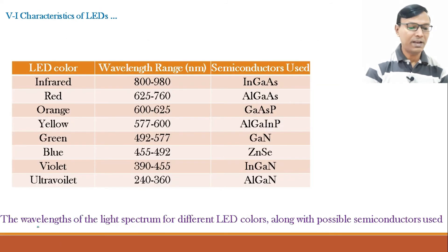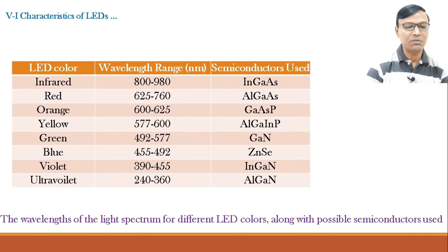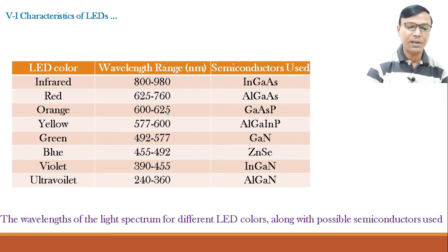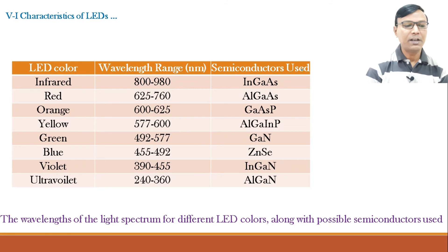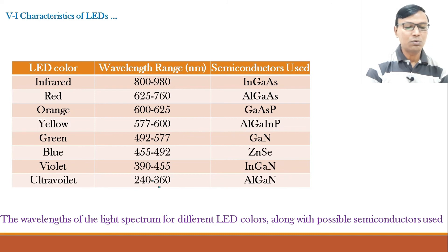This table shows the wavelengths of the light spectrum for different LED colors along with the possible semiconductors used. Red light is approximately 650 nanometers, ranging from 625 to 760 nm, using aluminum gallium arsenide. Orange light ranges from 600 to 625 nm using gallium arsenide phosphide. Infrared light, ranging from 800 to 980 nm using indium gallium arsenide, is not visible. Ultraviolet light, with a wavelength range of 240 to 360 nm made from aluminum gallium nitride, is also not visible. The visible light range extends from red to violet.